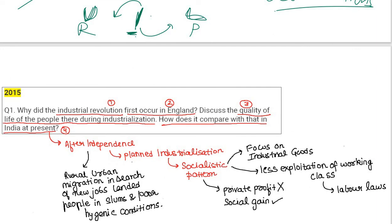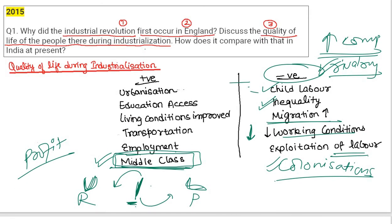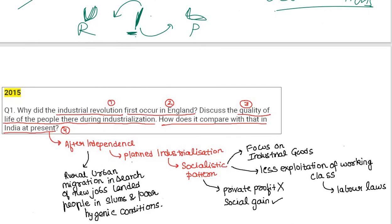When we compare that industrialization with industrialization in India: after independence, India went with a socialistic pattern of industrialization — planned industrialization focused not on private profit but on social gain. In England and Europe, people focused on private profit. In India, we focused more on social gain. We did focus on industrial goods, but exploitation of the working class was less because we had labor laws to protect their rights. That is how you compare India's industrialization with Europe's industrialization.